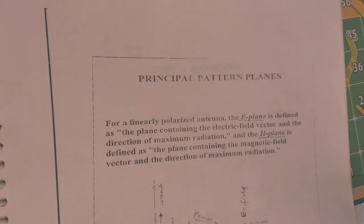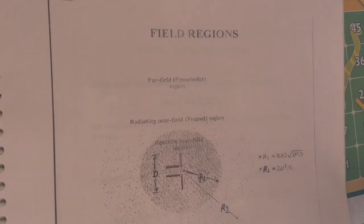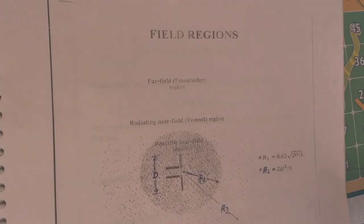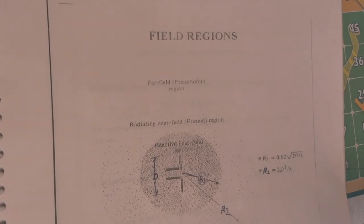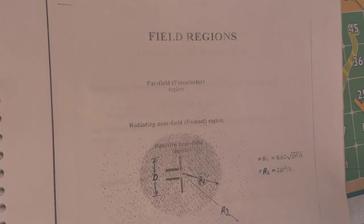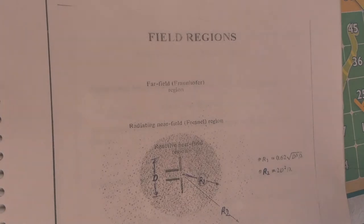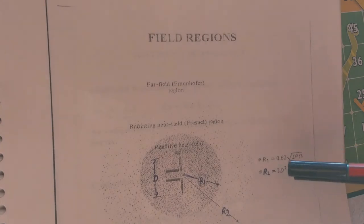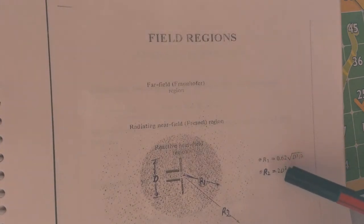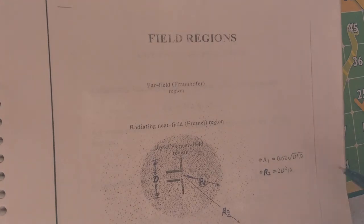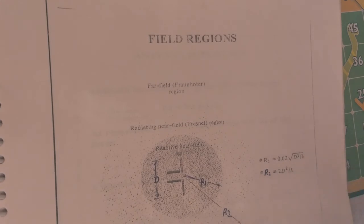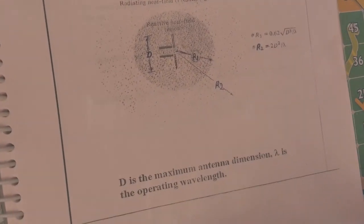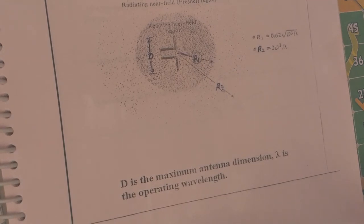Antennas generally have three field regions: number one is the reactive near-field region, number two is the radiating near-field region, and number three is the far-field region. The boundaries of these regions are defined by the formulas: R1 = 0.62 × √(D³/λ) and R2 = 2D²/λ, where D is the maximum antenna dimension and λ is the operating wavelength.